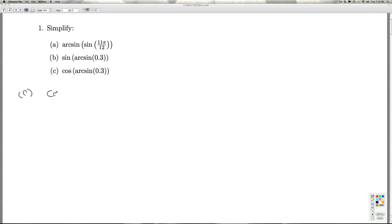All right, in part C, we're asked to find the cosine of the arcsine of 0.3. All right, so first thing we do is we're going to associate the real number arcsine 0.3 with an angle theta in radians.